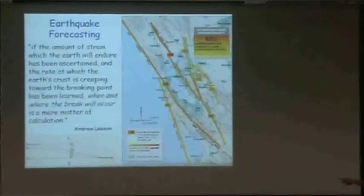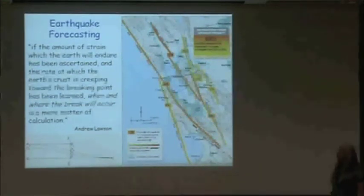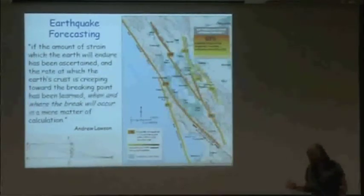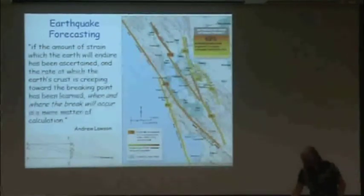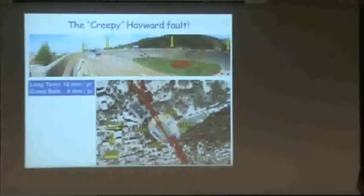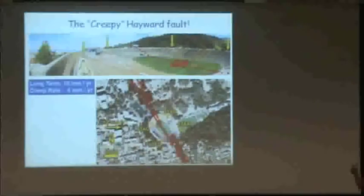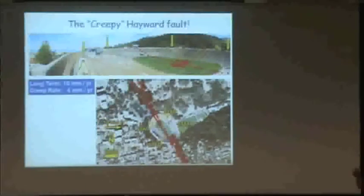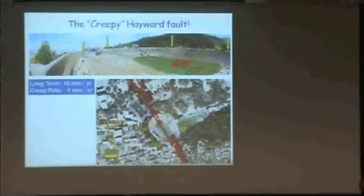The strain the earth will endure can be ascertained, and the rate at which the crust is creeping has been learned. We can calculate where the next one will happen, but not exactly when. The Hayward Fault creeps at about 4 millimeters per year — but it would need to creep at 10 millimeters a year in order to not have an earthquake. There is a section of the San Andreas Fault between Parkfield and Hollister that creeps at the rate of plate movement, so we don't expect big earthquakes there.